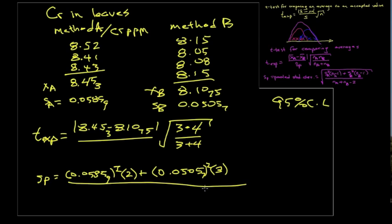And we take the ratio of that to the total number of degrees of freedom, which is 3 plus 4 minus 2 in our case. And we take the square root. And numerically, this gives us 0.0540.